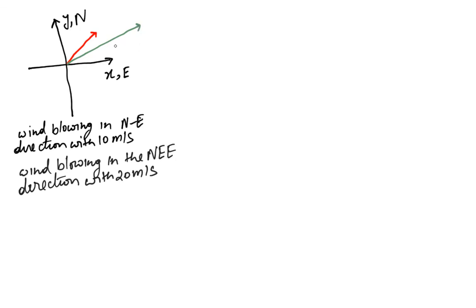What is the difference? The second arrow is twice the length of the first one which shows that it's twice in magnitude. Also, the angle it makes with the x-axis is 22.5 degrees while the other one makes an angle of 45 degrees.